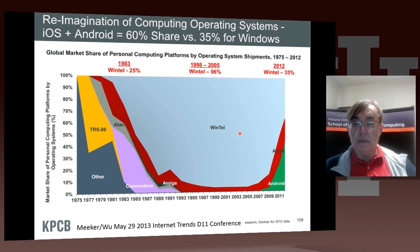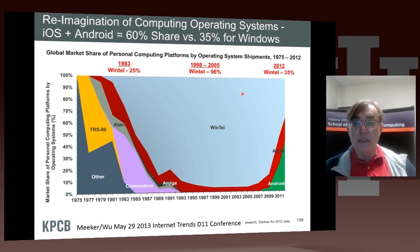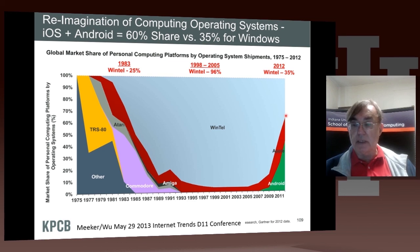This data presents the operating system market share across all machines, where Apple and Android are taking over from Windows. We can see an interesting dominance of Microsoft Windows starting around the mid-80s, where it reached 50%. Now Apple and Android combined are as much as 65% compared to Windows at 35%. This is an important and possibly inevitable change as we switch to a different type of device.